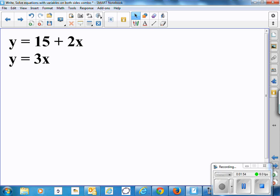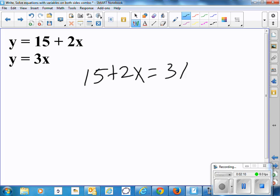So I could write equations kind of like that. Y equals $15 plus $2 for each DVD, or $3 for each DVD. I could say those two will be equal at some point. I'll say 15 plus 2x equals 3x, where those two lines cross.